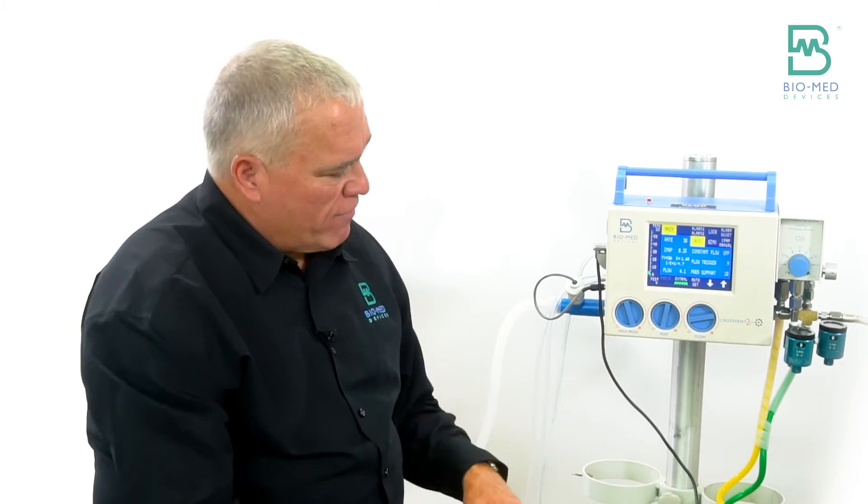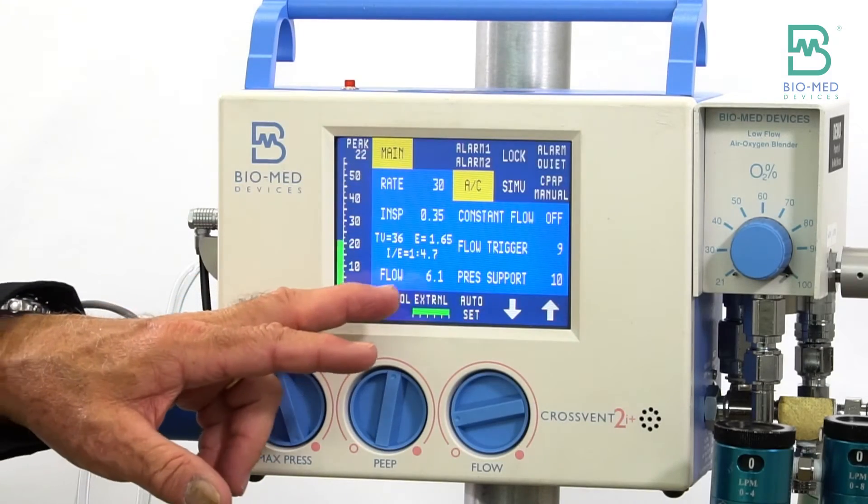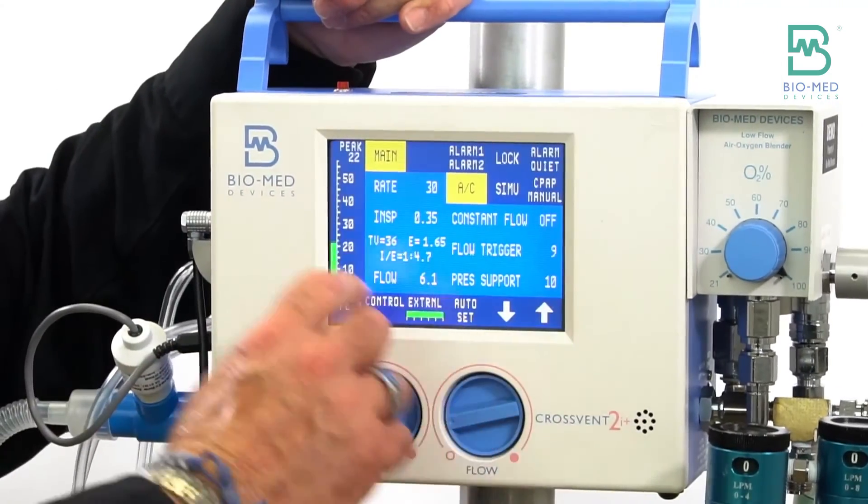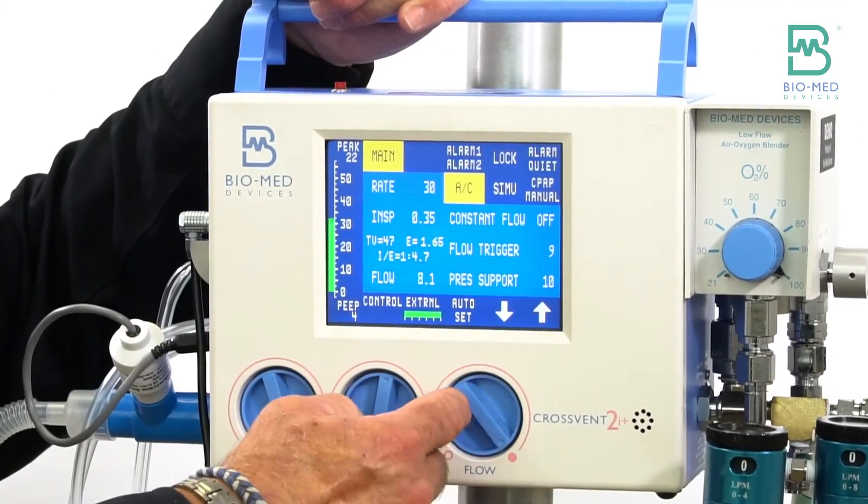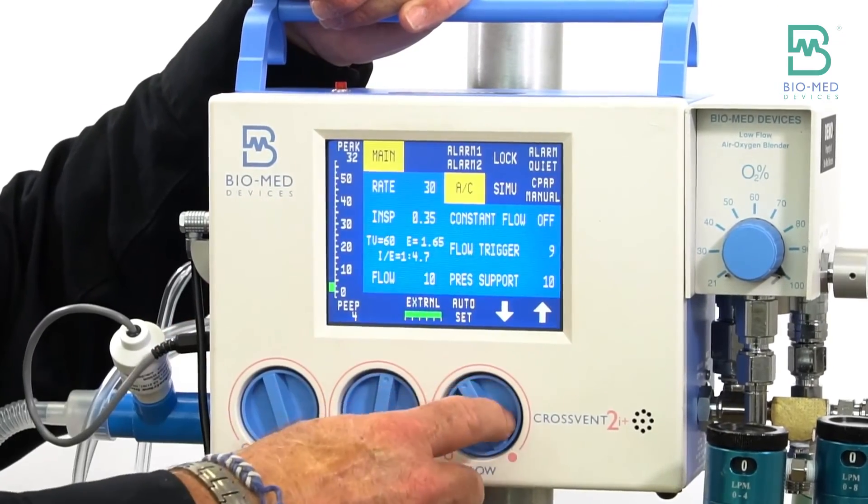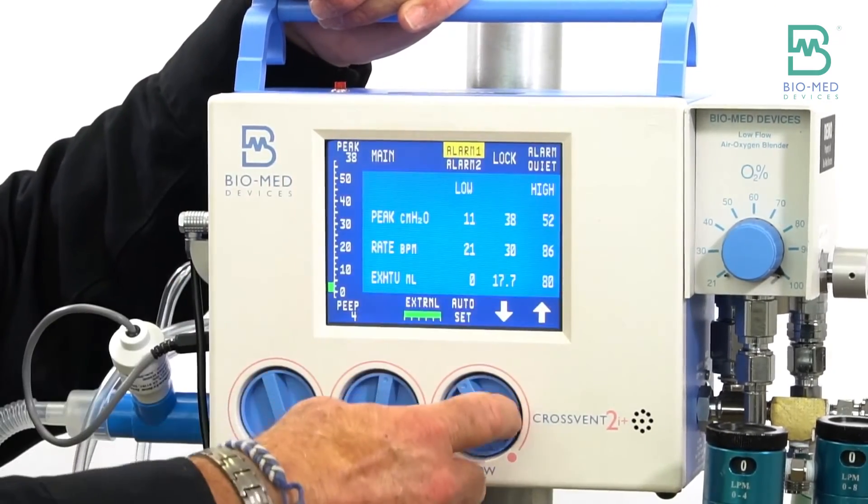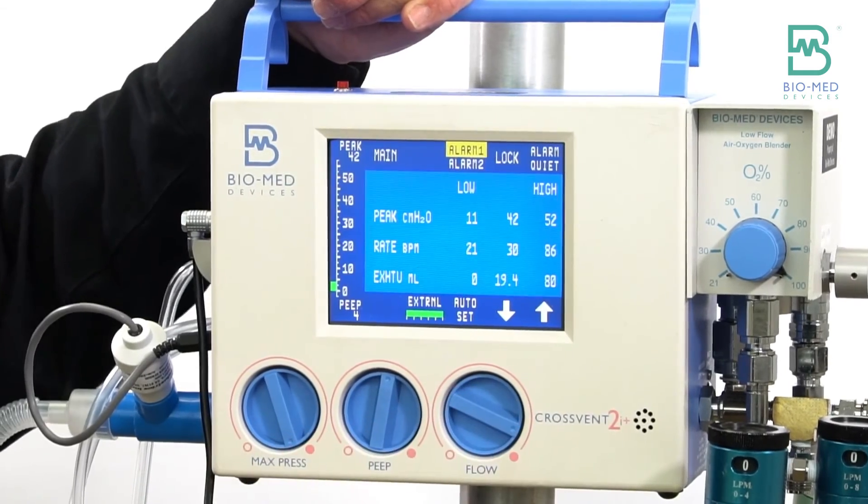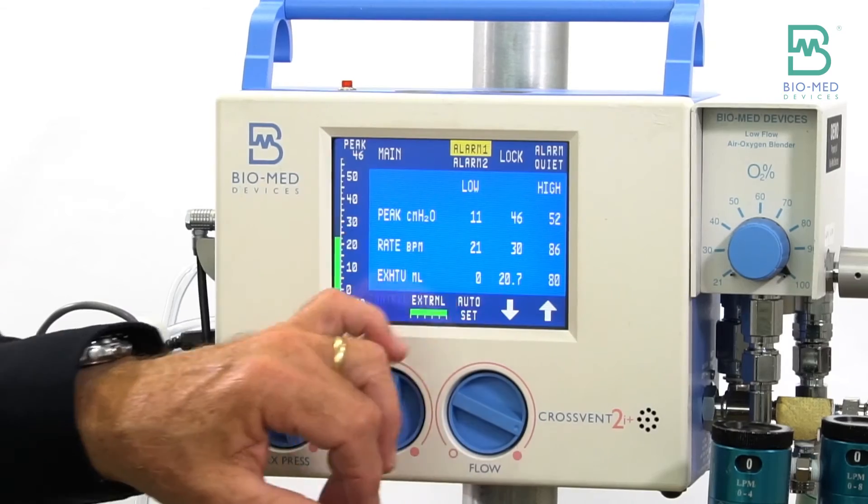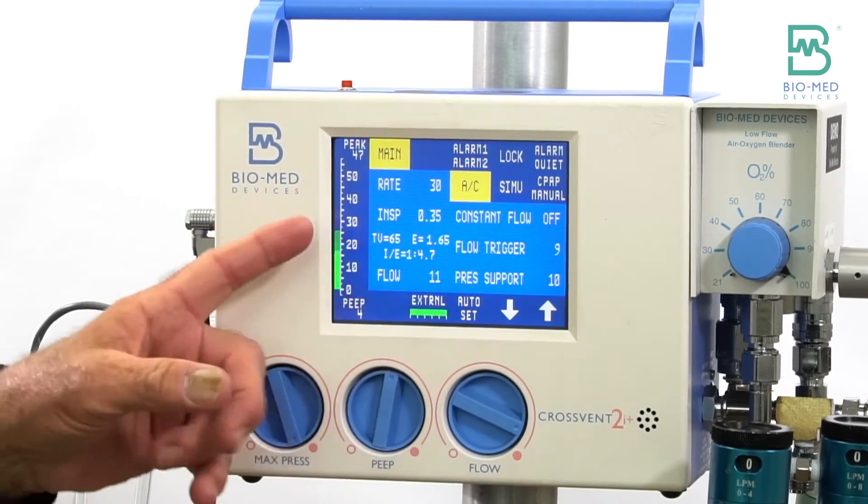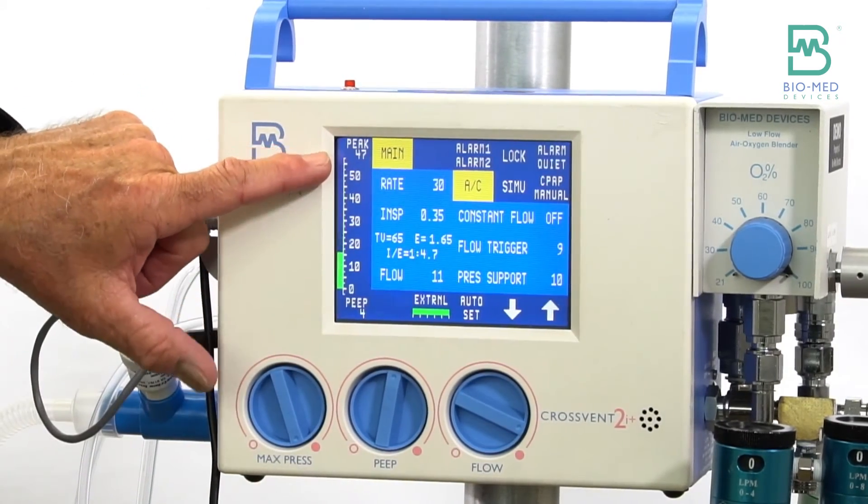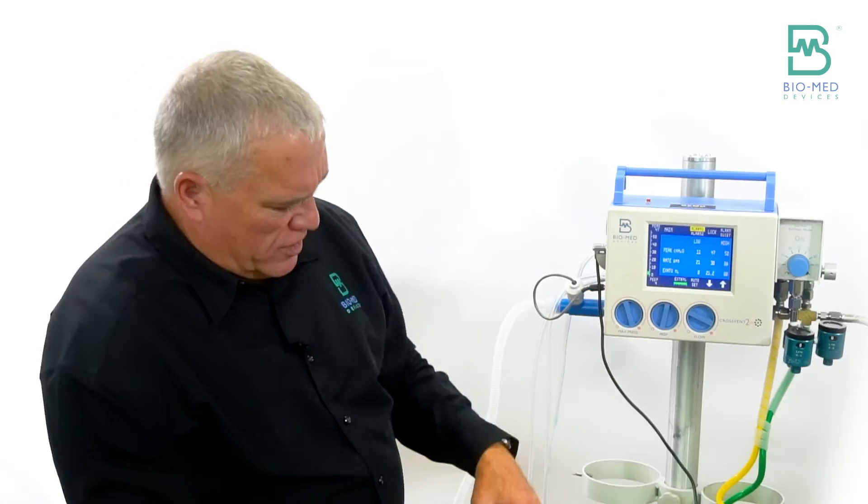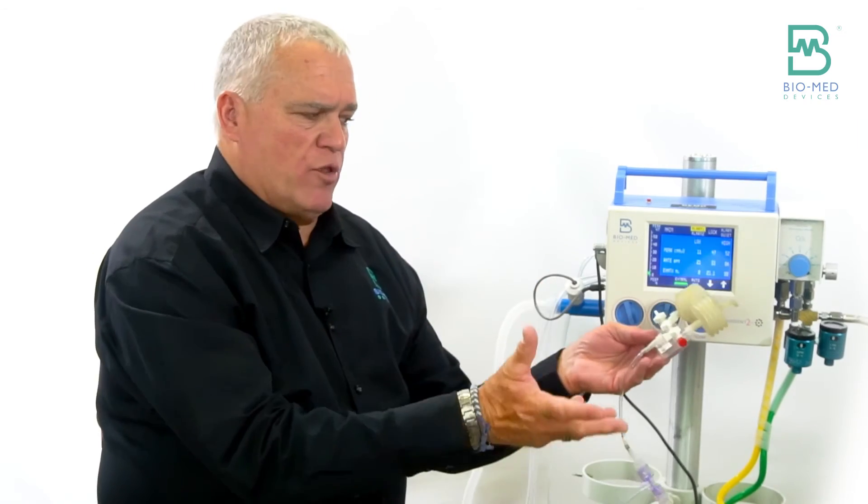So if I had to - well I already turned up the max pressure - so if I turn up the flow so that I'm turning up my volume, could I get to a point where I get to 20? So there you are, you're at 20. But look what it's taking - it's taking 47 centimeters of peak pressure to get that 20. And here's the dangerous part: if you actually turn the baby's head and then all of a sudden you don't have a leak anymore...